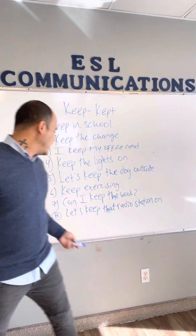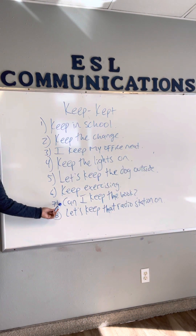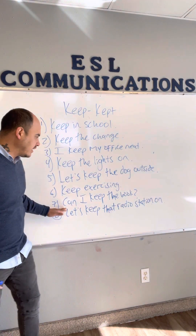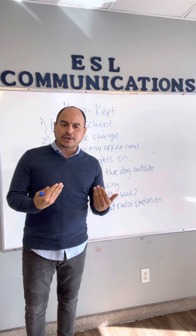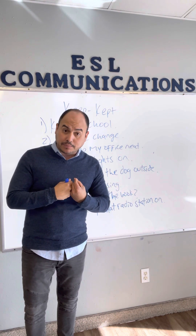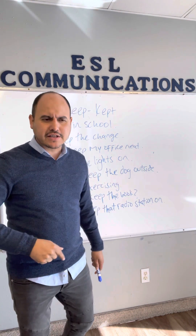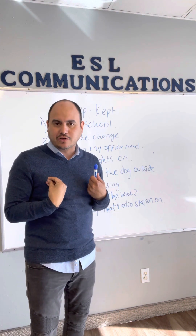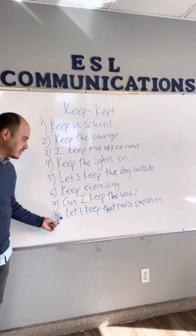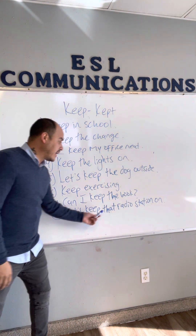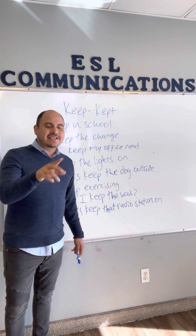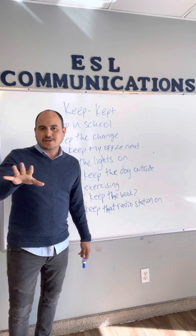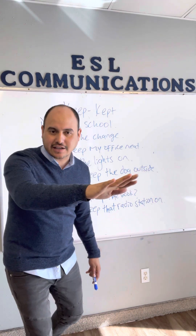Number six: someone is exercising and wants to stop — tell them don't stop. Keep exercising. Keep talking. Keep asking questions. Number seven: how do I ask if I can keep a book? Can I keep the book? And if you want to tell someone to keep it — quédatelo — keep it.